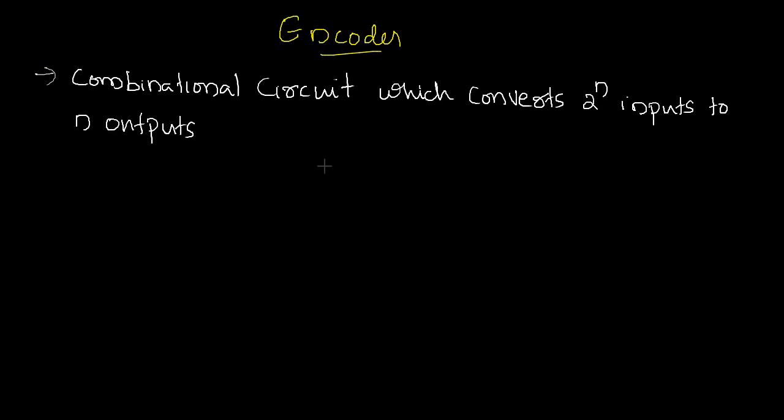Hi all. Today we are discussing about encoders. We already studied some circuits like multiplexers, demultiplexers, and decoders. These are all examples of combinational circuits. Like that, an encoder is also an example of a combinational circuit.